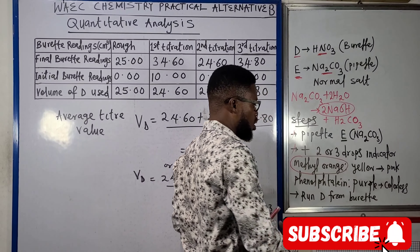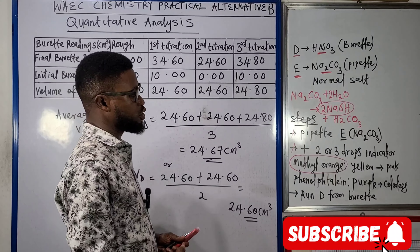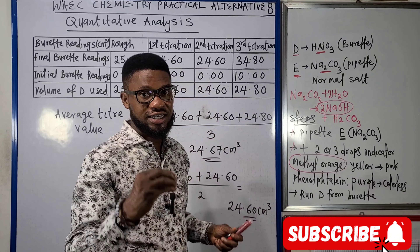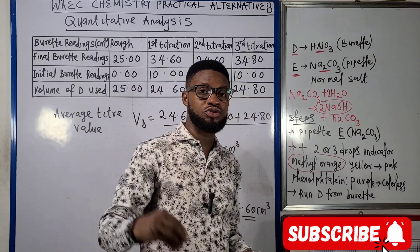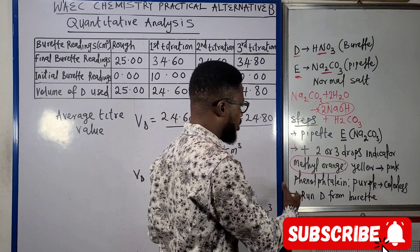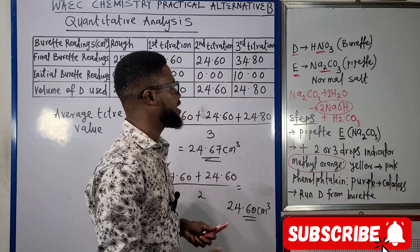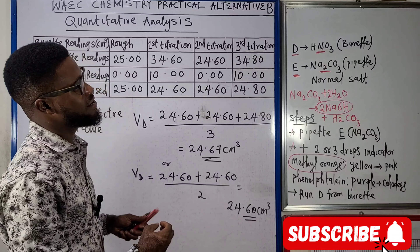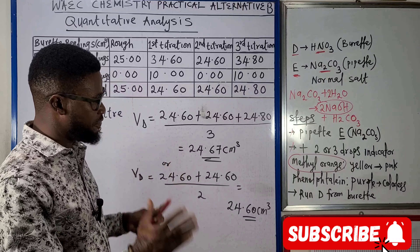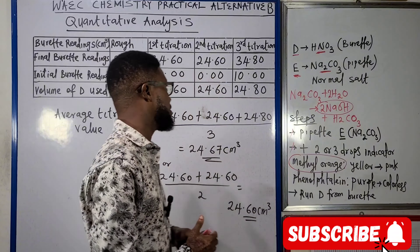If using phenolphthalein, the color changes from purple to colorless. The steps are clear: pipette a known quantity of sodium carbonate (E), add two or three drops of indicator based on the instruction given that day, then run the acid from the burette to obtain a consistent or concordant titer value.